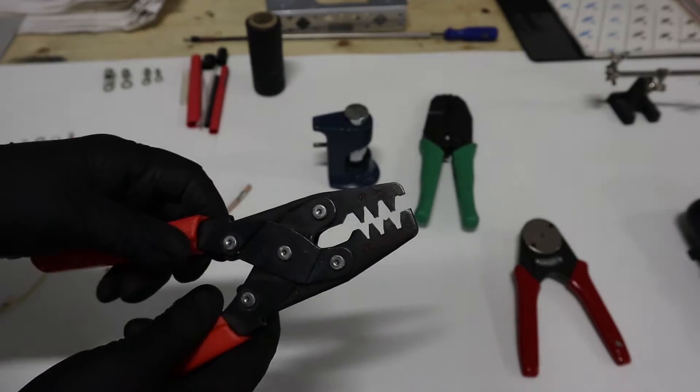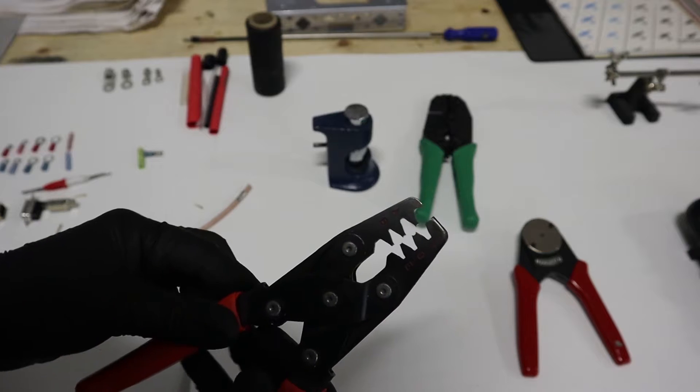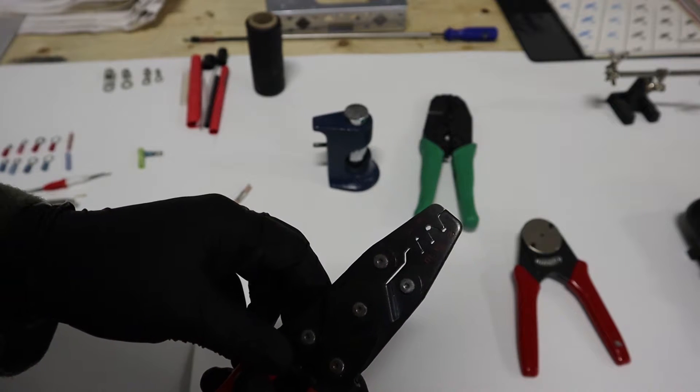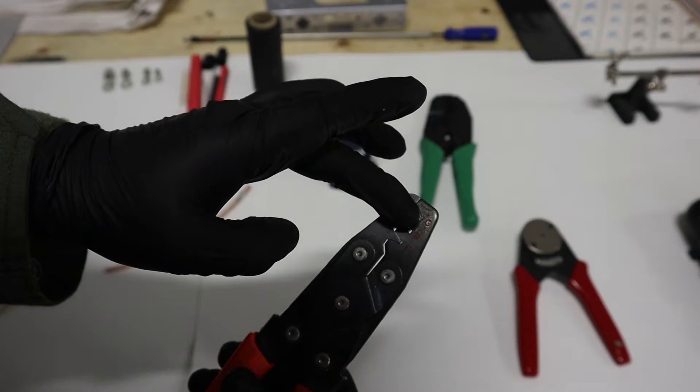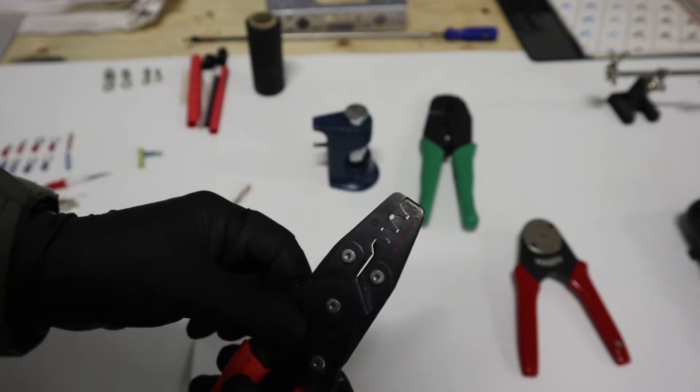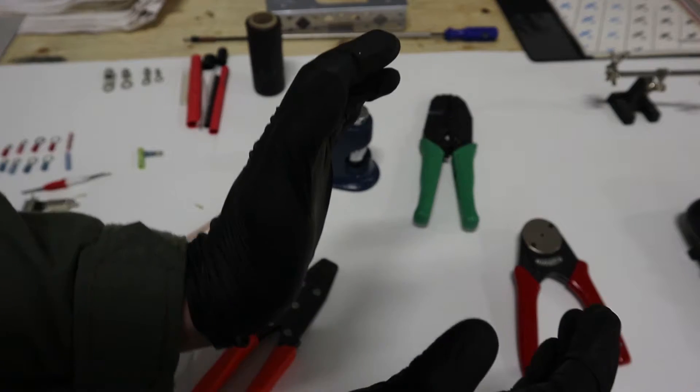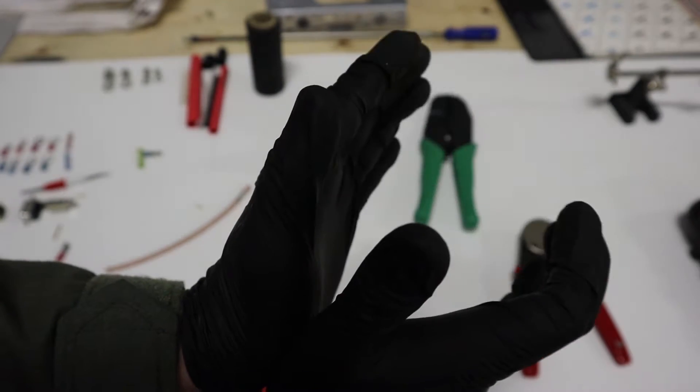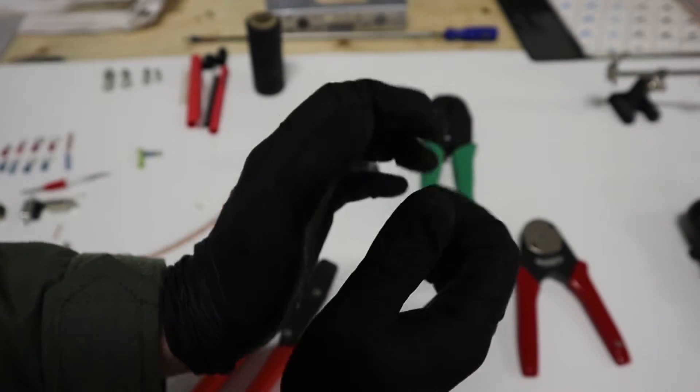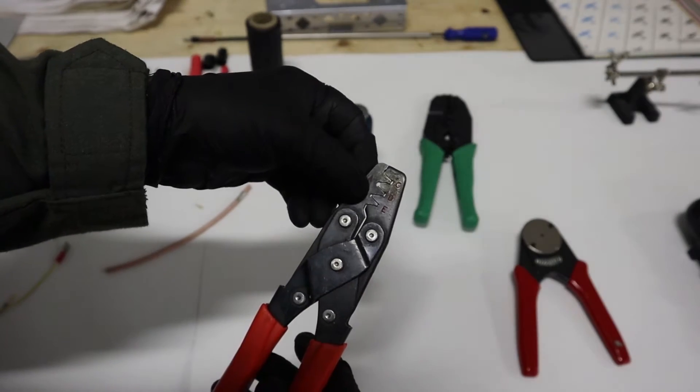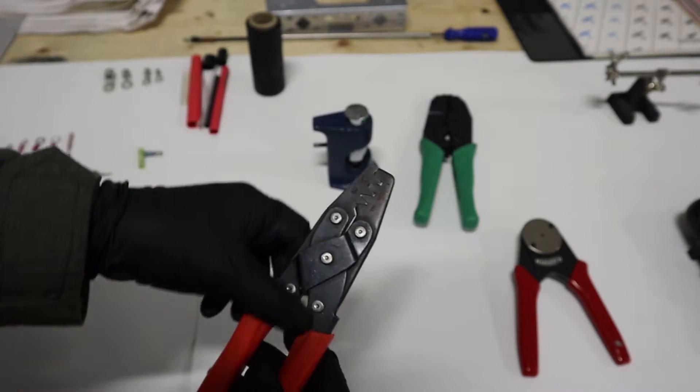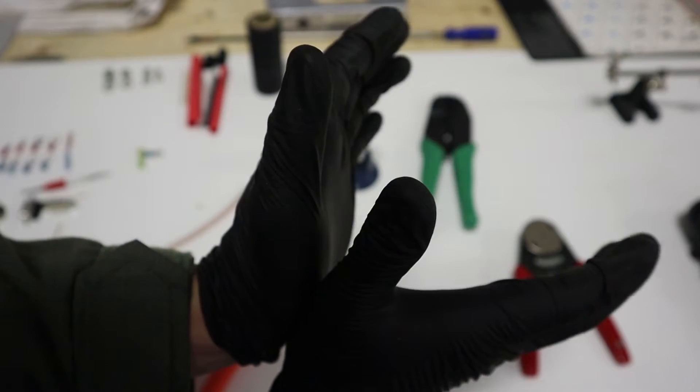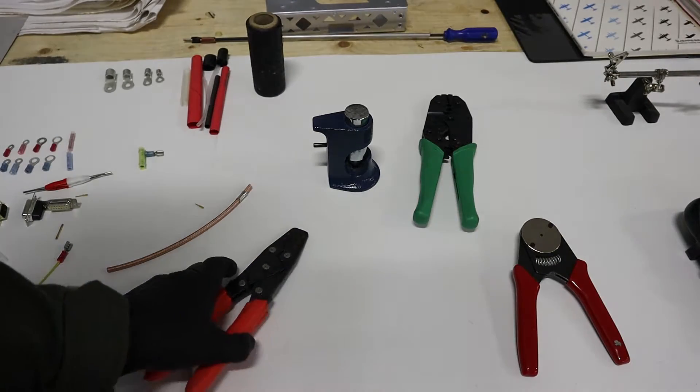Another type of crimper that you might see is this one here, and this is going to be used in the connectors that have the little metal tabs hanging off. One side is going to crimp onto the wire, the other side is going to crimp onto the sleeve of the wire. The one that crimps onto the wire will actually crush into the wire and hold it nice and secure, but the one that actually holds onto the shielding of the wire is just going to crimp itself into a circular shape, not put any stress on the wire, just basically hold the connector on there nice and secure.